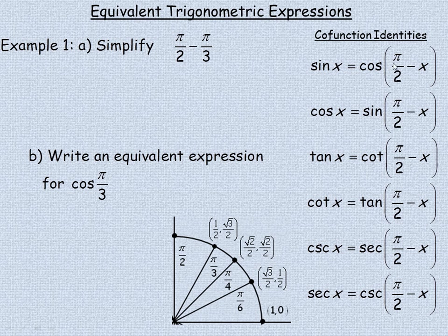These cofunction identities all have exactly the same pattern. The sine of any angle is the cosine of pi over 2 minus that angle. Same with cosine — the cosine of any angle is the sine of pi over 2 minus that angle. And the same is true with tan and cotan, and cosecant and secant.